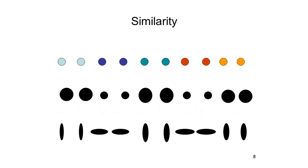According to the principle of similarity, we tend to group objects together based on similarity in appearance. In the first row, we see pairs of dots grouped together according to similarity of color. In the second row, pairs are grouped according to similarity in size. And in the third row, pairs are grouped according to similarity of orientation. No matter what the dimension, if objects are similar to each other, we tend to group them together.